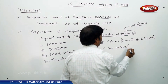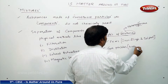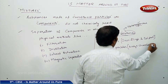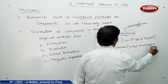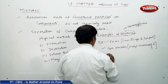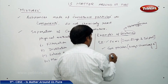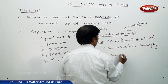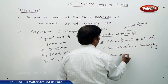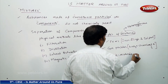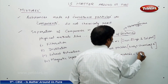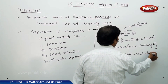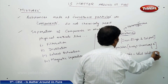Gunpowder: potassium nitrate plus charcoal and sulphur is gunpowder. Then all alloys are also mixtures. Alloys are mixtures and they are also called solid solutions.